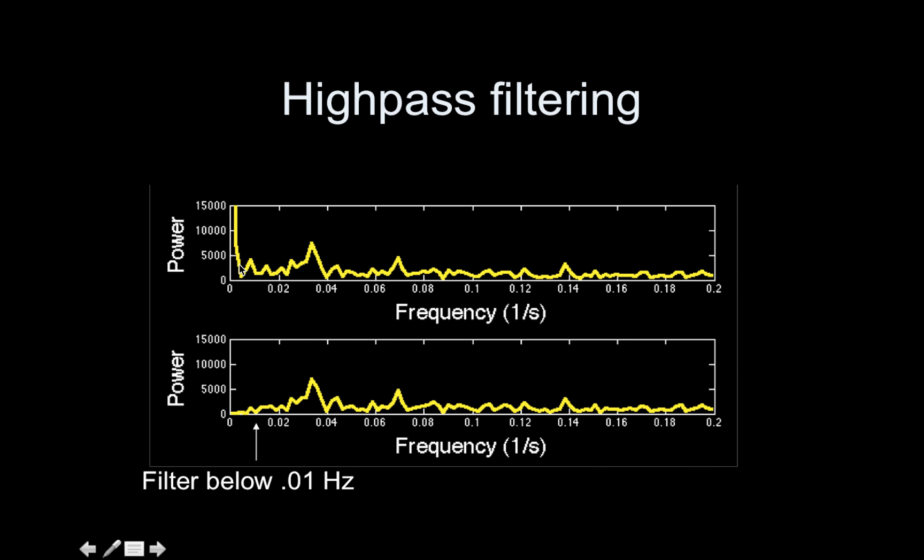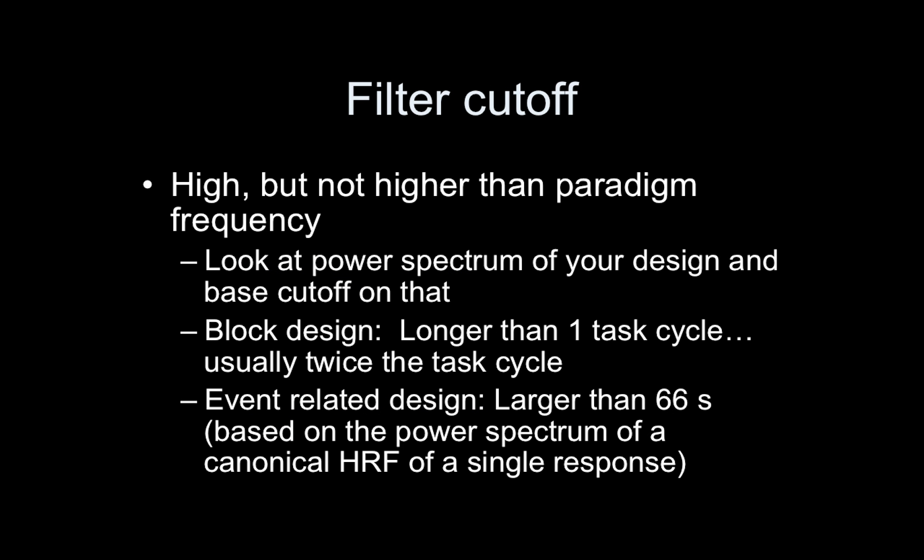So avoid really long block designs. Don't have a subject do a task for 40 seconds on, 40 seconds off, or something like that, because then you're in danger of your signal getting hacked off by your high-pass filter, or your signal getting mixed in with this noise. Your filter cutoff — you want it high, but not higher than the paradigm frequency. Look at the power spectrum of your design and base your cutoff on that. For a block design, you want it longer than one task cycle, usually twice the task cycle. For an event-related design, larger than 66 seconds — based off of a canonical HRF.